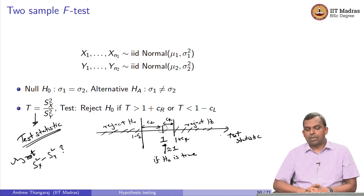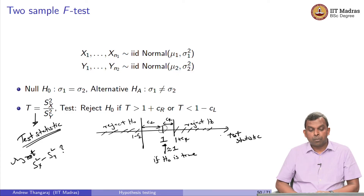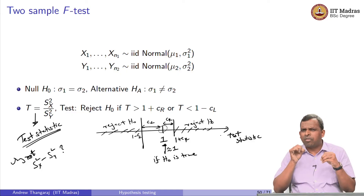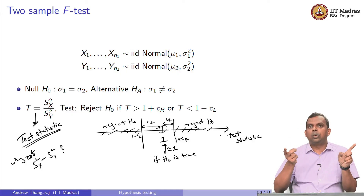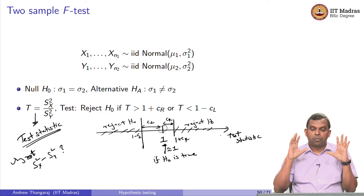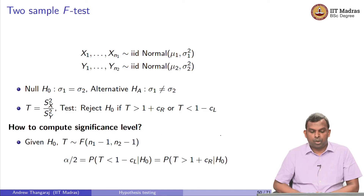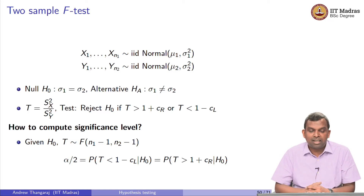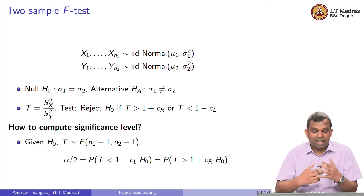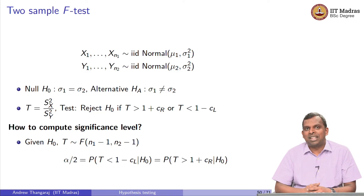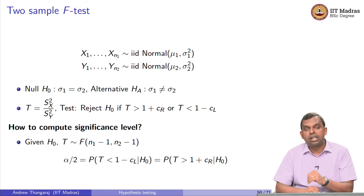The F test for two-sample variance is slightly different from others: we take the ratio of the two sample variances rather than their difference, and we look at the F distribution because Sx squared over Sy squared follows the F distribution. Given H naught, sigma 1 equals sigma 2, so Sx squared over Sy squared itself has the F distribution. The PDF of the F distribution — say F(N1−1, N2−1) — is not symmetric, with the value 1 falling somewhere within the distribution.